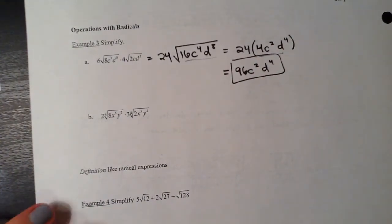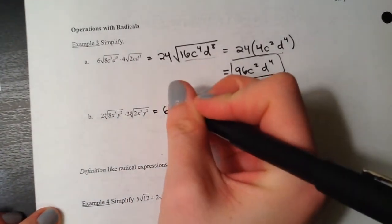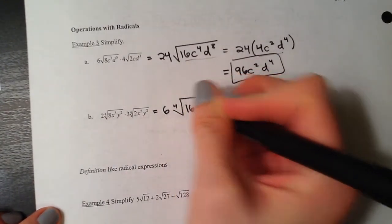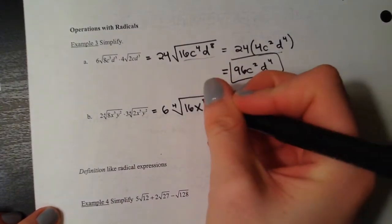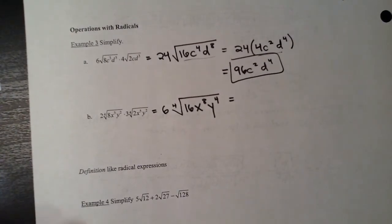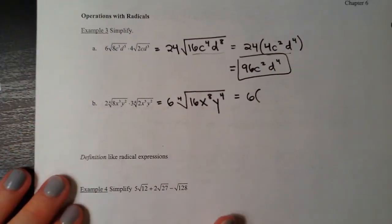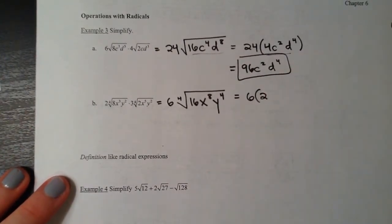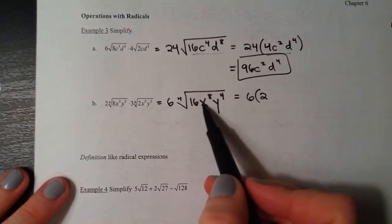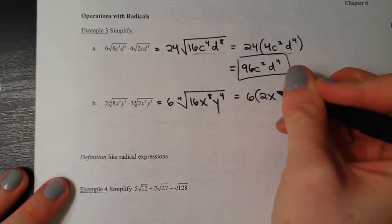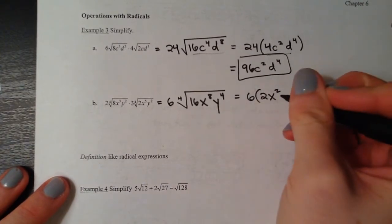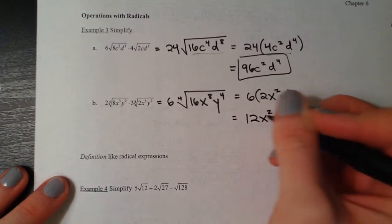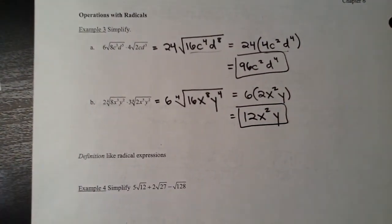Part b uses fourth roots - same process. Multiply the outside numbers: 2 times 3 is 6. Under the fourth root: 8 times 2 is 16, x cubed times x to the fifth is x to the eighth, y squared times y squared is y to the fourth. These are all perfect fourth roots: the fourth root of 16 is 2, divide the exponent 8 by 4 to get x squared, and the fourth root of y to the fourth is y. Multiply the 2 times 6 for your final answer.